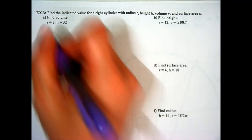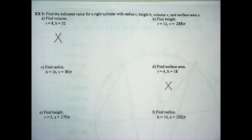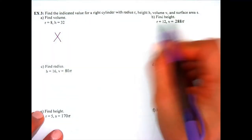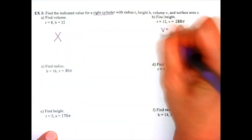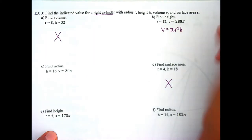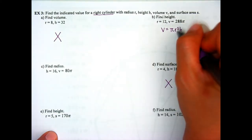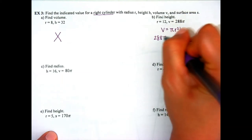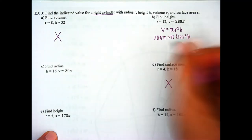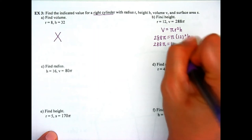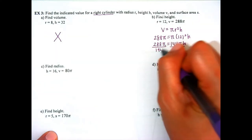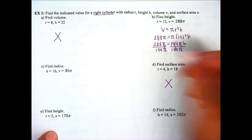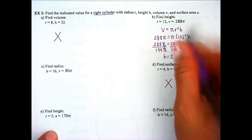We'll skip parts A and D since they're redundant, and go to part B: find the height given the radius and the volume. Using the volume formula πr²h and plugging in volume of 288π and radius 12: 288π equals π times 144 times h. Dividing both sides by 144π, the π's cancel, and we get height equals 2 units.